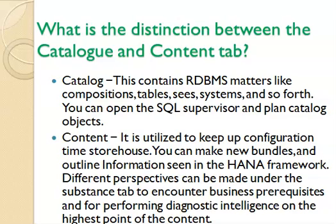What is the difference between the Catalog and Content Tab? Catalog: This contains RDBMS objects like schemas, tables, views, procedures and so forth. You can open the SQL editor and explore catalog objects. Content: It is used to maintain design-time repository. You can create new packages and outline information views in the HANA system. Different calculation views can be created under the Content tab to address business requirements and perform diagnostic analysis.